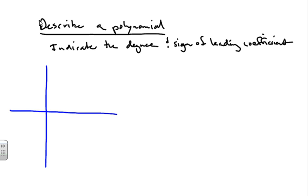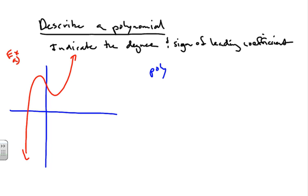For example A, if we're given a graph that looks like this, what do we see about this polynomial? This is a smooth curve, so we know it's a polynomial, because all polynomials are continuous — they have a smooth curve with no holes, no gaps, no vertical asymptotes.